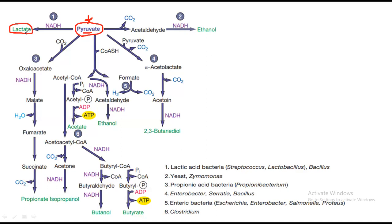Pyruvate is converted into lactate, and this lactate gives flavor to our food. These acids can also react with other nutrients in the food and give additional flavors. The second type is alcoholic fermentation. Pyruvate is converted into acetaldehyde with the release of CO2, and then converted into ethanol. This is conducted by yeast and Zymomonas.